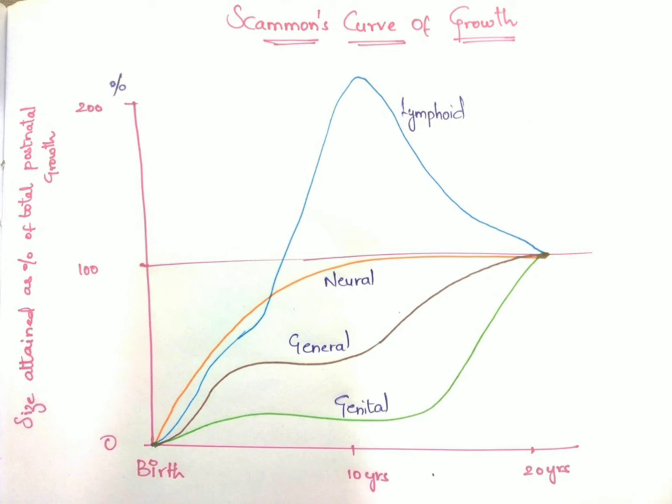After the tenth year, a rapid phase of growth occurs, terminating by 18 to 20 years of age. The general tissues are the muscles, bones, and other organs. General tissue is also called visceral tissue, and it will be completed up to the age of 20 years. Remember, the S-shaped curve represents the general or visceral tissue, which includes muscles, bones, and other organs.